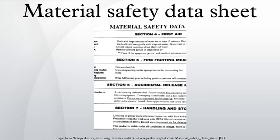In the United States, the Occupational Safety and Health Administration requires that MSDSs be available to employees for potentially harmful substances handled in the workplace under the Hazard Communication Regulation. The MSDS is also required to be made available to local fire departments and local and state emergency planning officials under Section 311 of the Emergency Planning and Community Right-to-Know Act. The American Chemical Society defines Chemical Abstracts Service registry numbers, which provide a unique number for each chemical and are also used internationally in MSDSs.